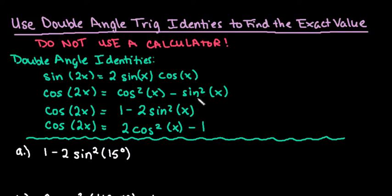So the double angle identities that could possibly show up are sine of 2x is equal to 2 sine x times cosine x.